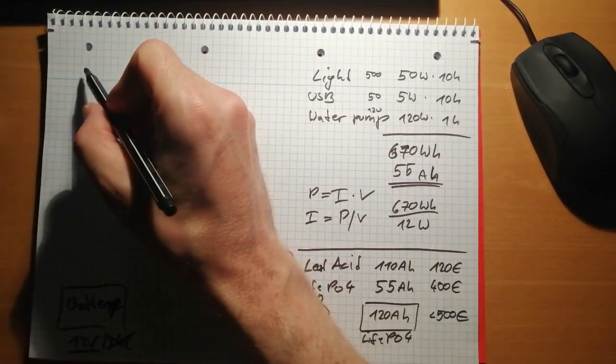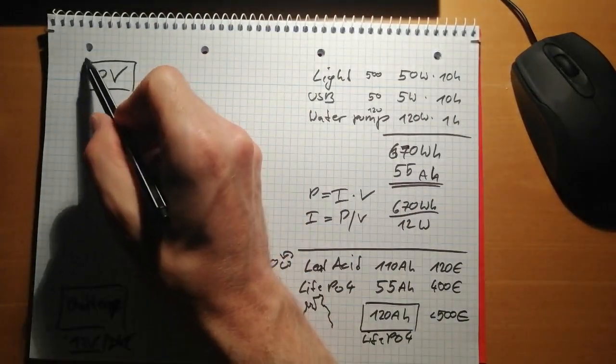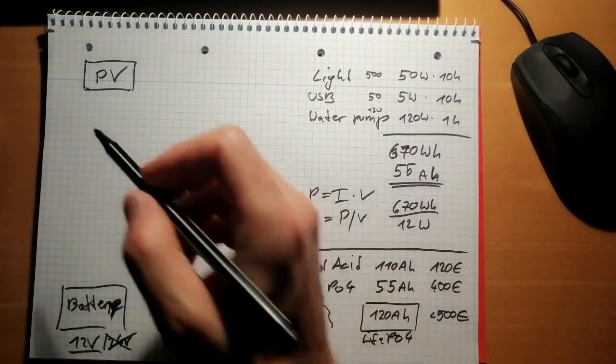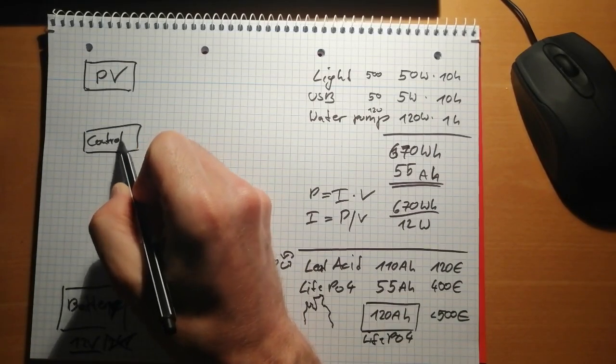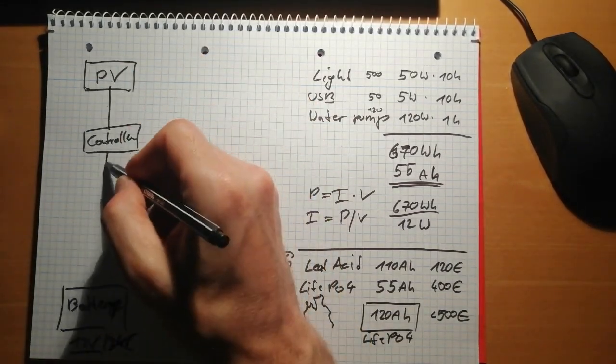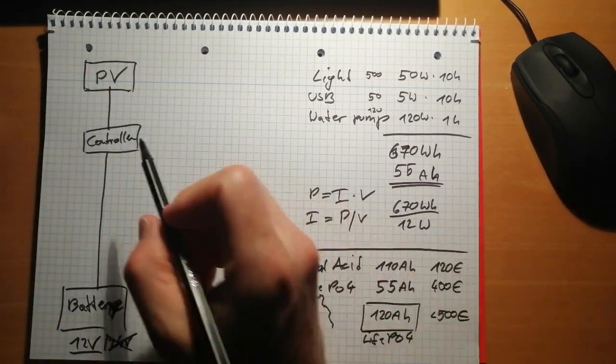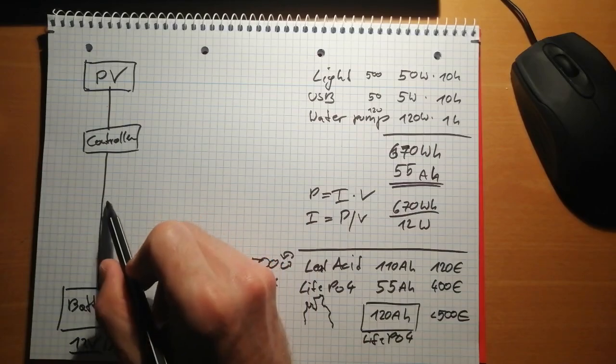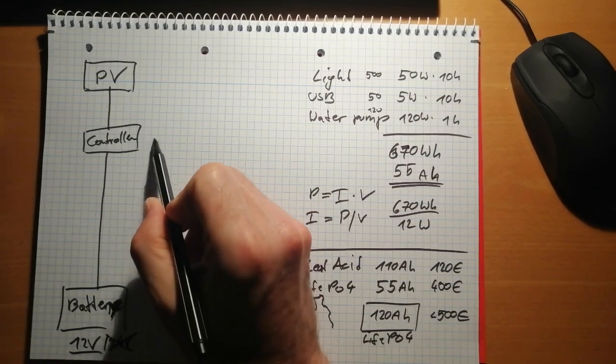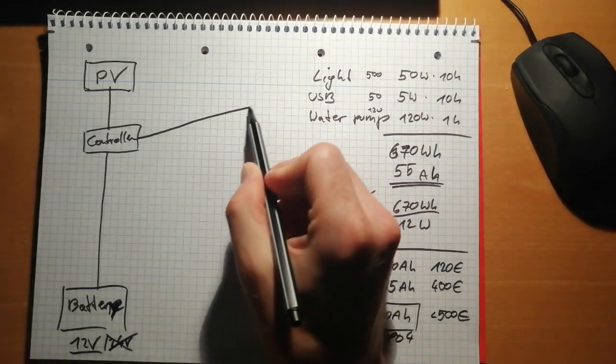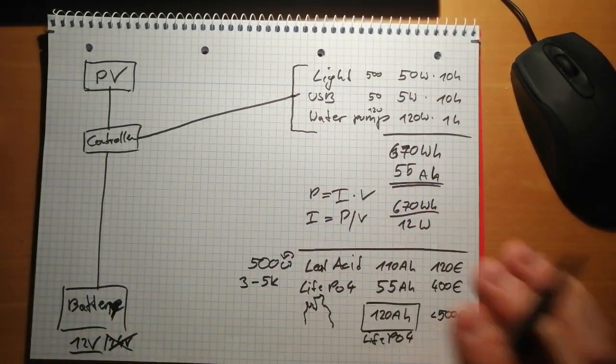If we're talking about the system, we also have a panel on the roof and then we have in between a charge controller. This charge controller is connected to your battery. That's a quite simple system and then the controller or your battery, depending on your controller, a lot of controllers have also connections for the load. The load is then connected to the controller. That's a simplified schema of the whole system.